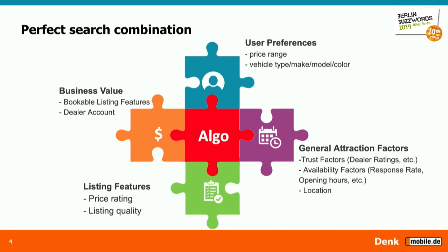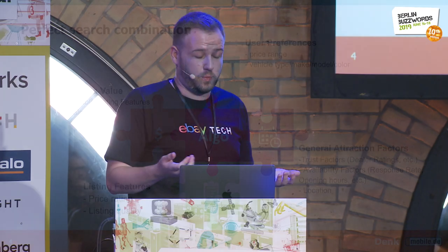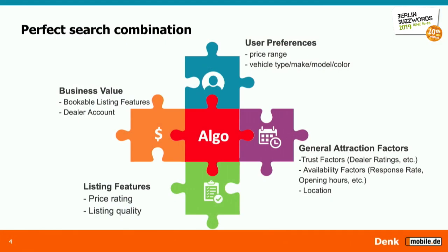We also factor in user preferences — not just make and model, but understanding what our users view on our platform and how they behave, to get an idea of relevance for that specific user. And finally, listing quality: when we recommend listings, we look at the number of images, how complete the listing is compared to others, and whether there's a good description. We also wanted some concept of what a good offer was, which we eventually decided to address using price rating.